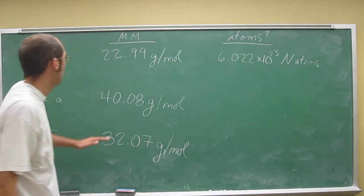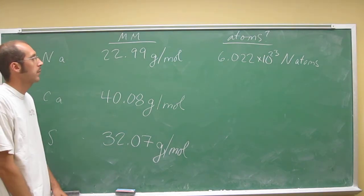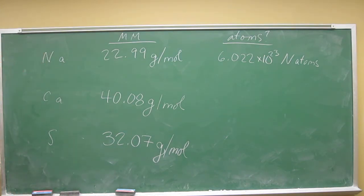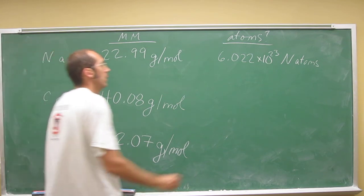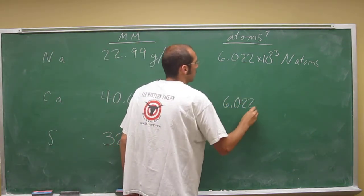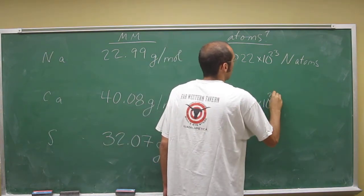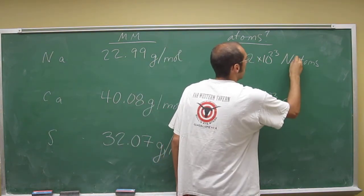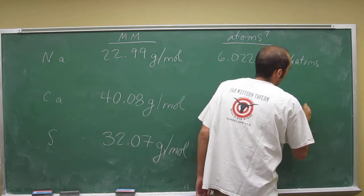What if you had 40.08 grams of calcium? Well, that's how much one mole weighs, so you must have one mole. So if you've got one mole, you've got 6.022 times 10 to the 23rd calcium atoms.